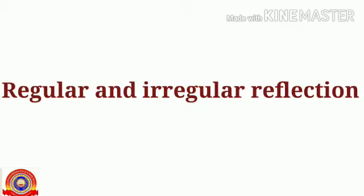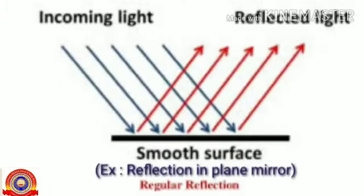These are the laws of reflection. Next: regular and irregular reflection — these are the two types of reflection. Regular reflection forms on smooth surfaces; for example, reflection in a plane mirror. Here the angle of reflection of light equals the angle of incidence, on the opposite side of the normal to the point of incidence. This is regular reflection.